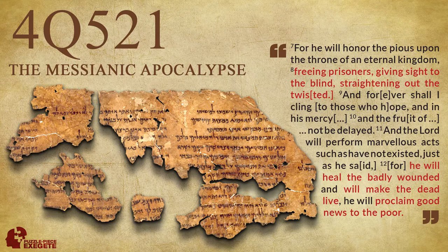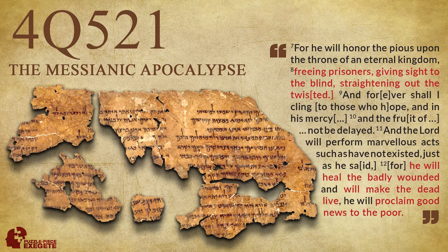What we have here is a quotation from Psalm 146 — that's the freeing prisoners, giving sight to the blind, straightening out the twisted portion. And that last phrase, 'proclaim good news to the poor,' is found in Isaiah 61. What makes this particular fragment so significant is that it has parallels with the Gospel of Luke, specifically Luke chapter 7. This fragment wasn't actually published until 1992, so it's fairly recent in relative terms.